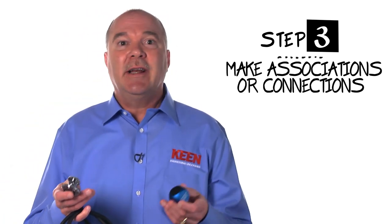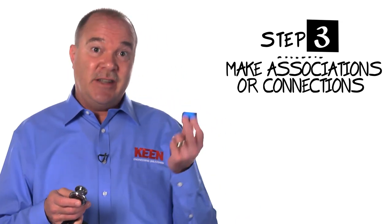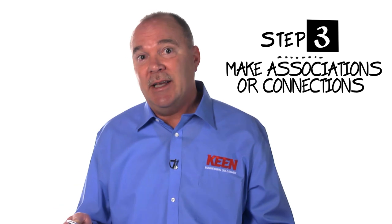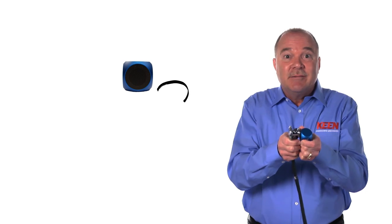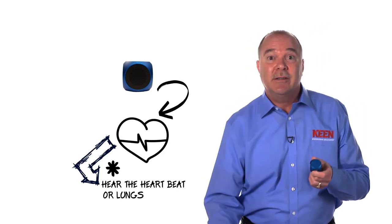And now for the third step in the bisociation process, generating ideas that make associations or connections between an improved stethoscope and our items on the stimulus list. Here's some examples of ideas generated by a typical team. We could connect the chest piece directly to the speaker cube, so our whole stethoscope is just this. By using the cube, everyone could hear the heartbeat or lungs.